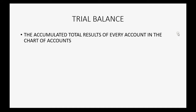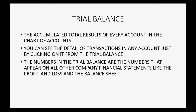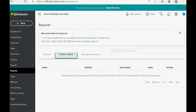The first report we're going to customize and save is called the Trial Balance. That's the accumulated total results of every account in the chart of accounts. You can see the detail of transactions in any particular account just by clicking on it from the Trial Balance. The numbers in the Trial Balance are the same numbers that appear on all other company financial statements, like the Profit and Loss and the Balance Sheet.